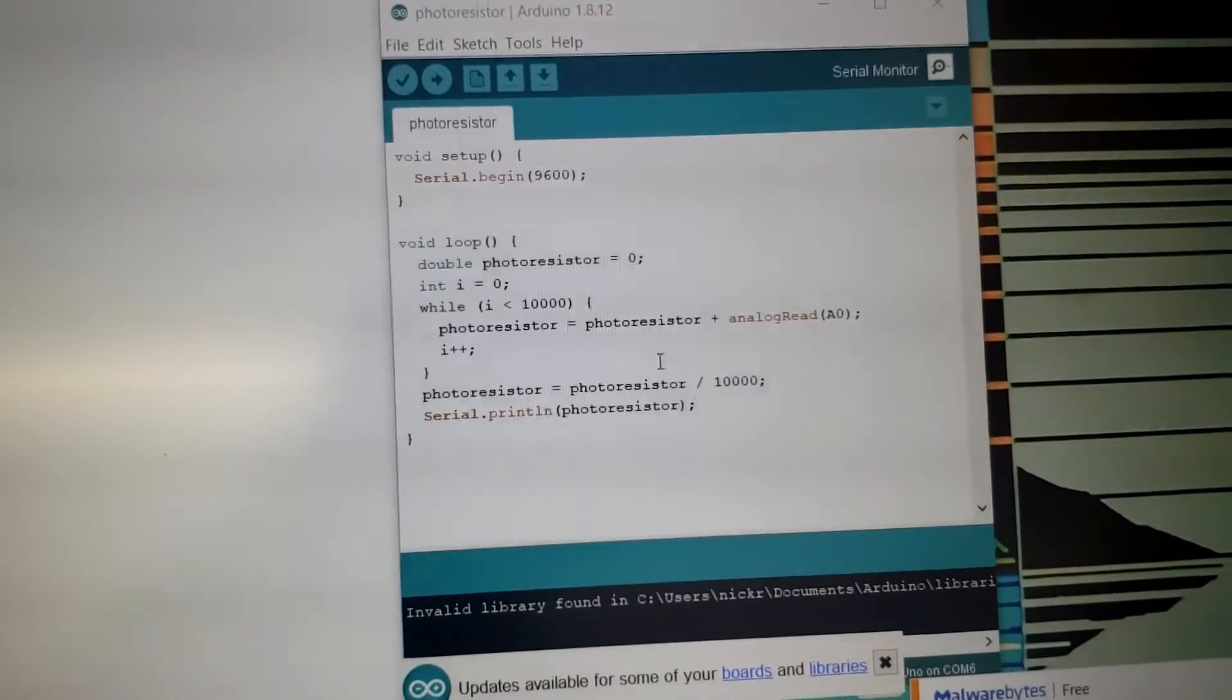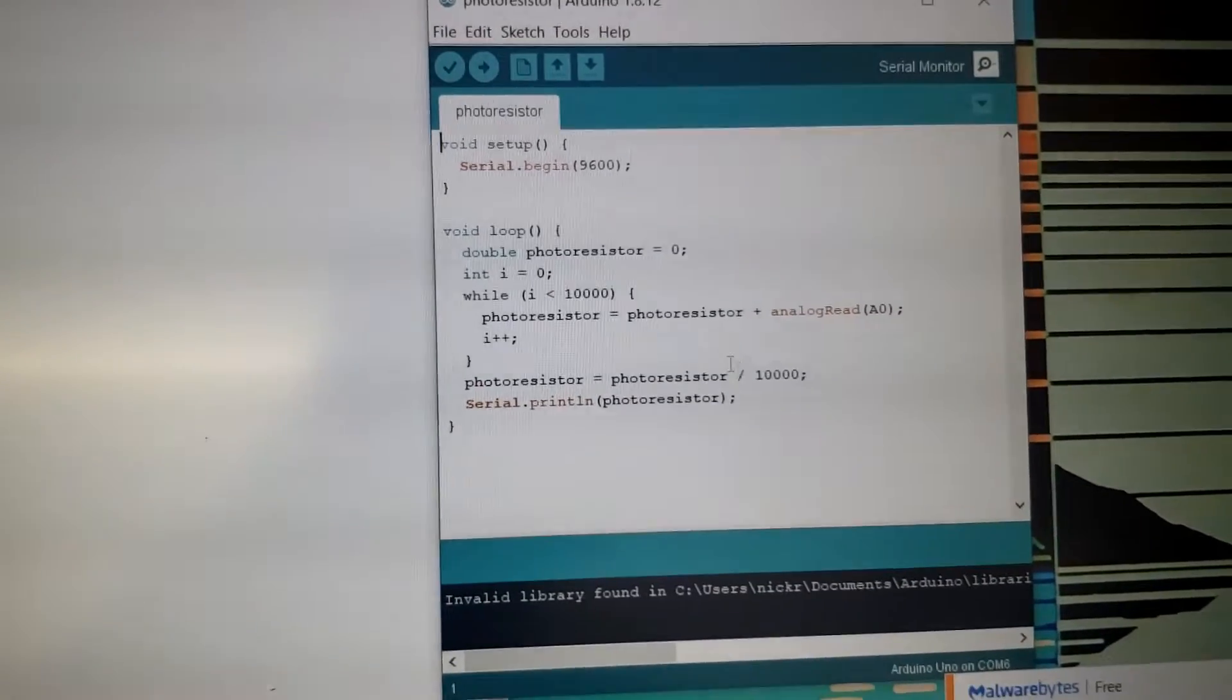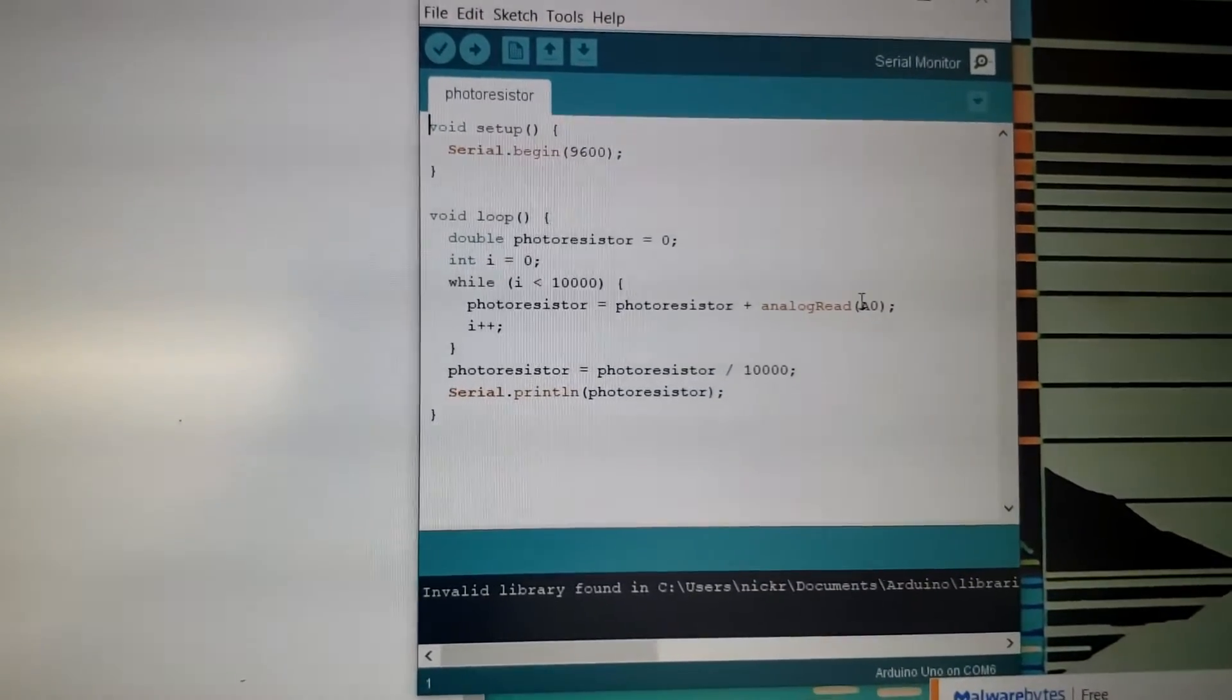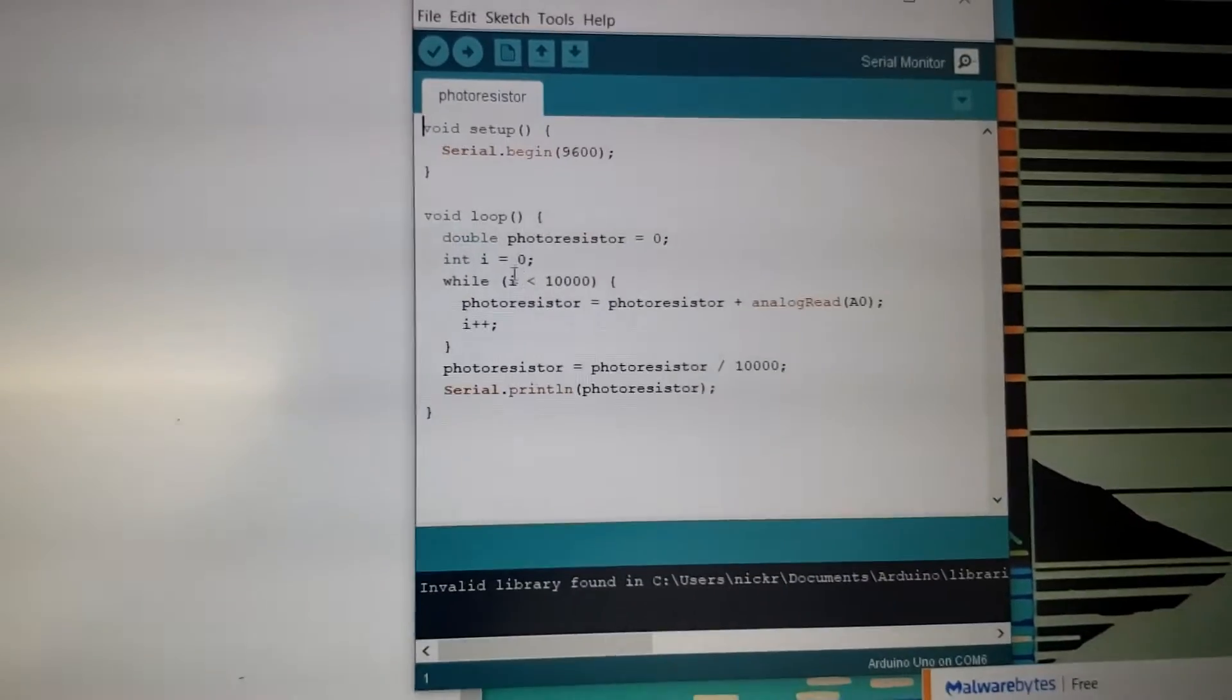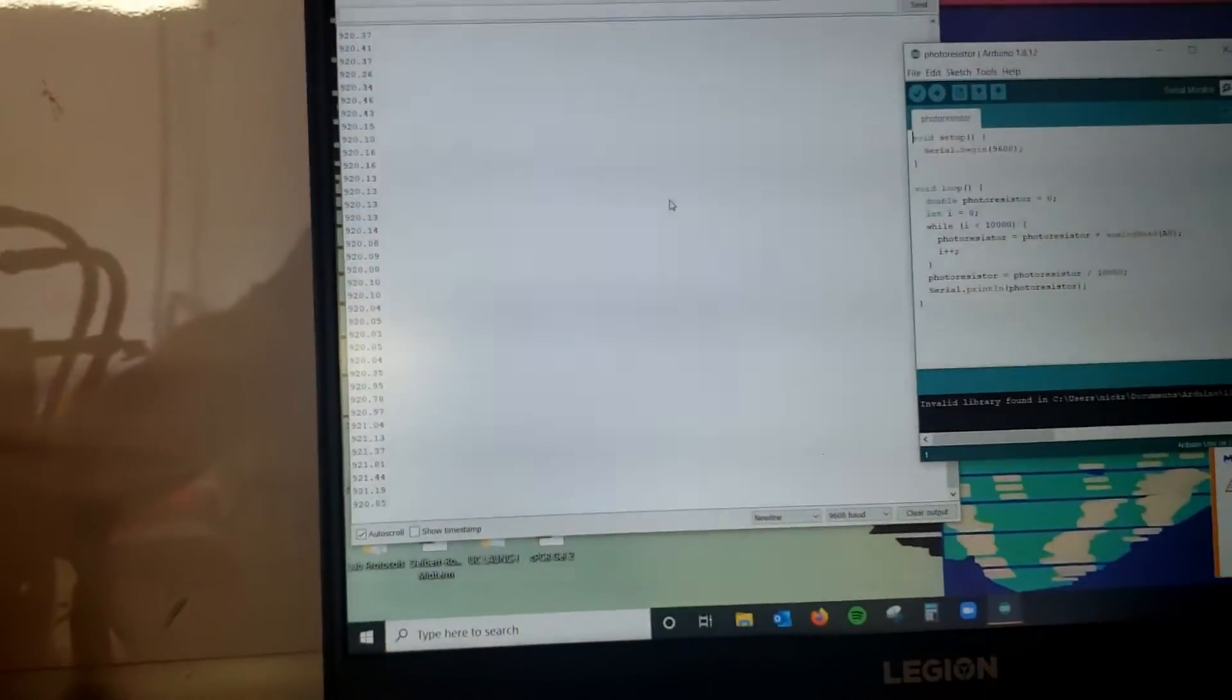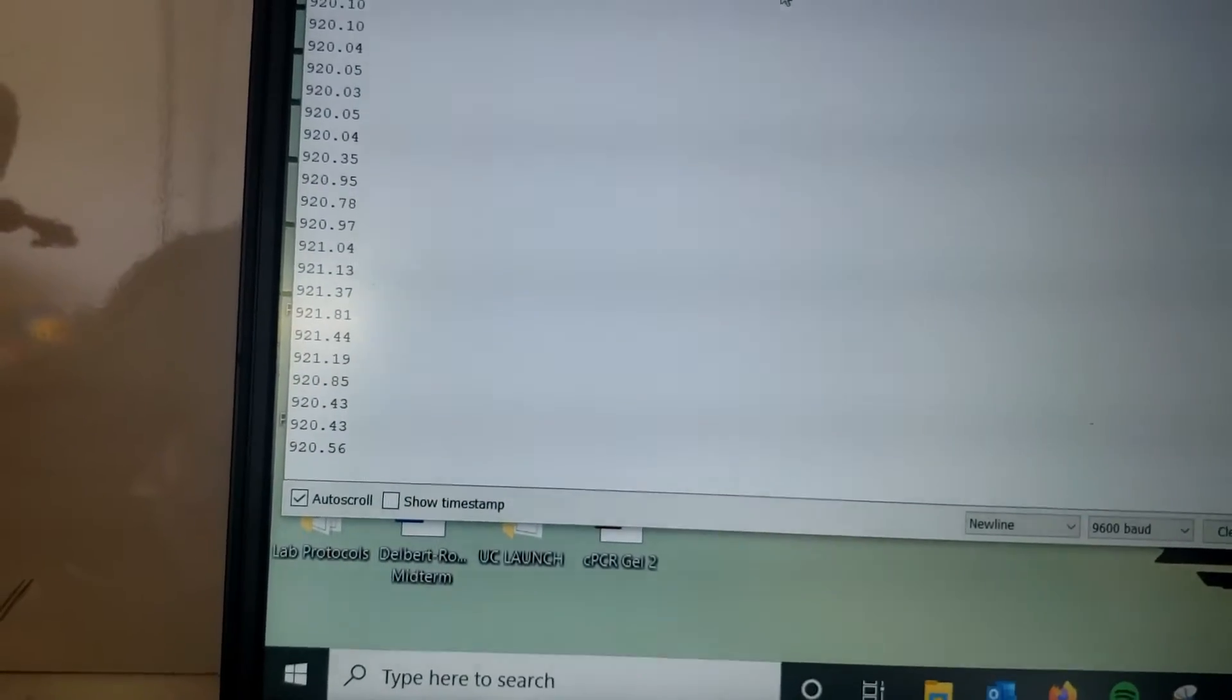And so the idea here is I'm just taking a moving average of the photo resistor reading. It's on pin A0. So here's A0 here, and I'm taking 10,000 readings and averaging them together, and then printing on the serial monitor. So you can see here on the serial monitor, we have readings coming in.